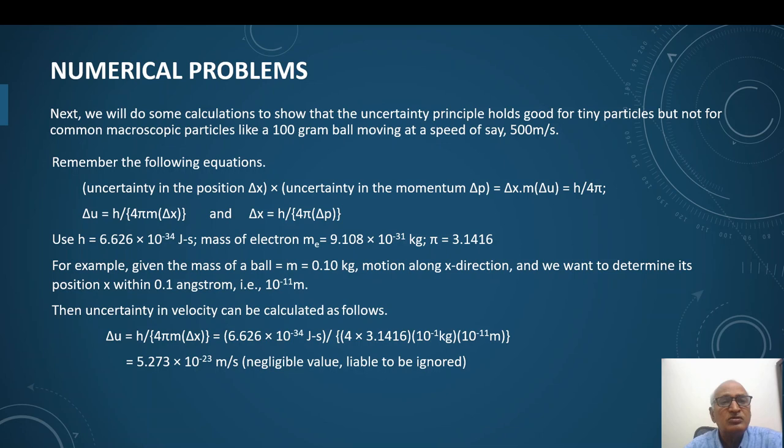A numerical problem, or solving numerical problem, we should remember the following equation very clearly. Uncertainty in position Δx multiplied by uncertainty in momentum can be equals h upon 4π. If we simply remember this equation, then we can calculate uncertainty in velocity Δu, or uncertainty in position Δx, using that simple formula. Here the constants which we very often use: h is 6.626 × 10^-34 joules second, mass of electron 9.108 × 10^-31 kilograms, π is 3.1416. So in this way we can calculate uncertainty.